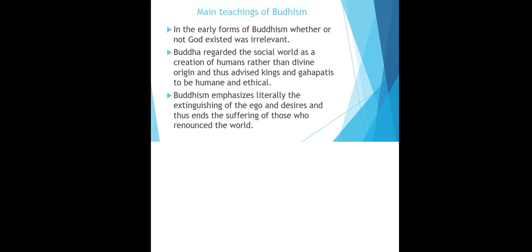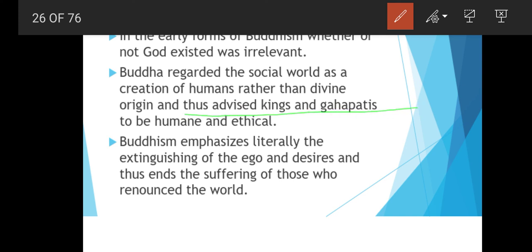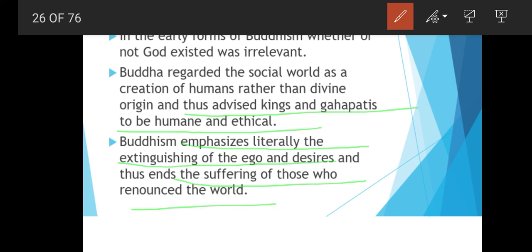In early Buddhism, whether or not God existed was considered irrelevant. Buddha regarded the social world as a creation of humans rather than of divine origin, and advised kings and gapatis to be humane and ethical. Buddhism also emphasized extinguishing the ego and desire, thus ending suffering. When a person eliminates ego and desire, suffering can be ended.